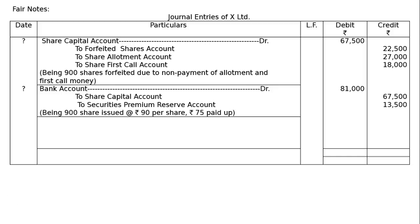Another Rs. 25 will be called later. To securities premium reserve account: 900 shares at Rs. 15 — since Rs. 75 called up share reissued at Rs. 90, 90 minus 75 is Rs. 15. So 900 into 15 = Rs. 13,500. Being 900 shares reissued at Rs. 90 per share, Rs. 75 paid up.